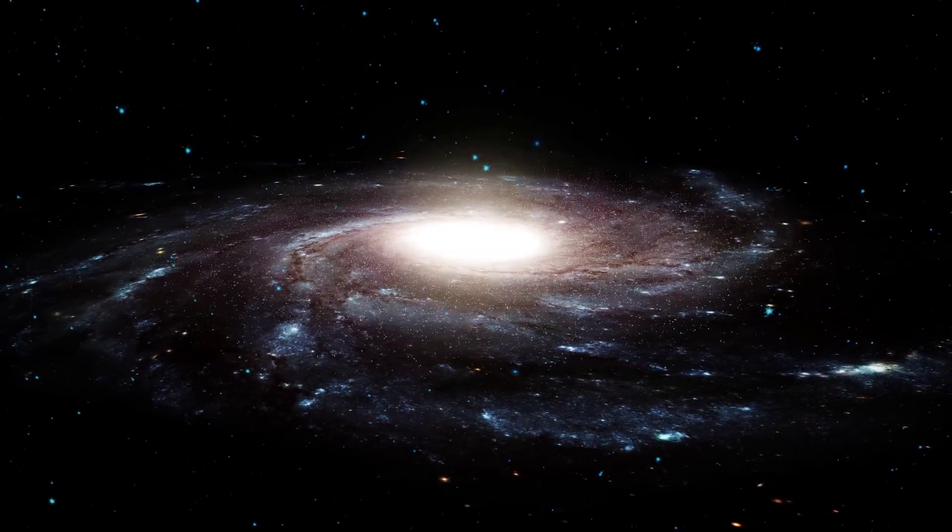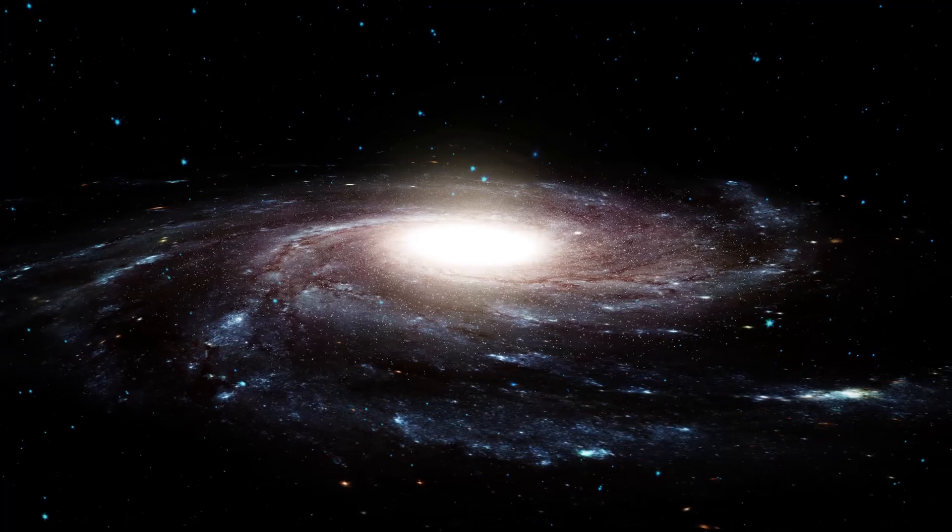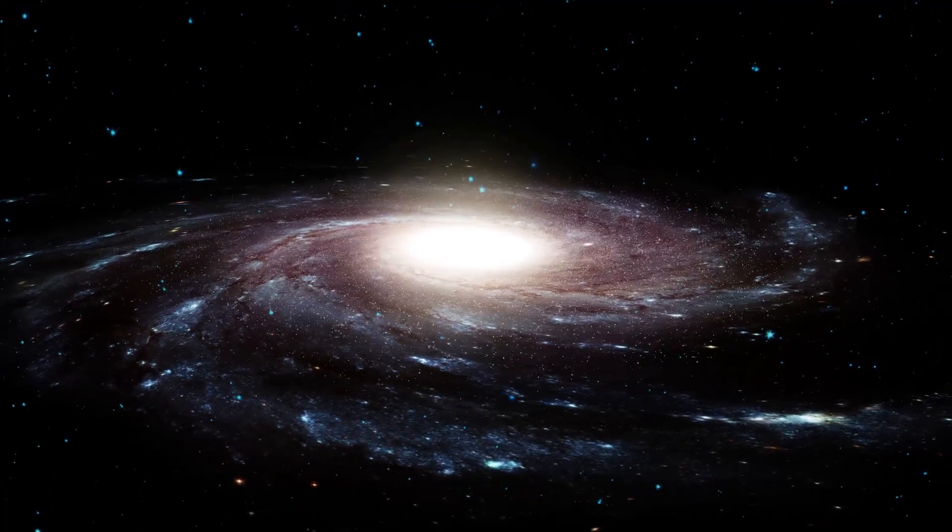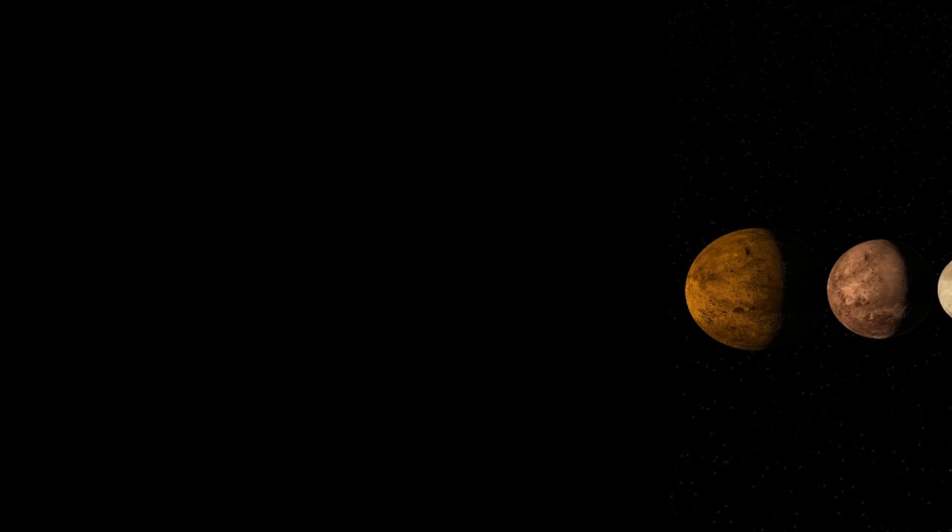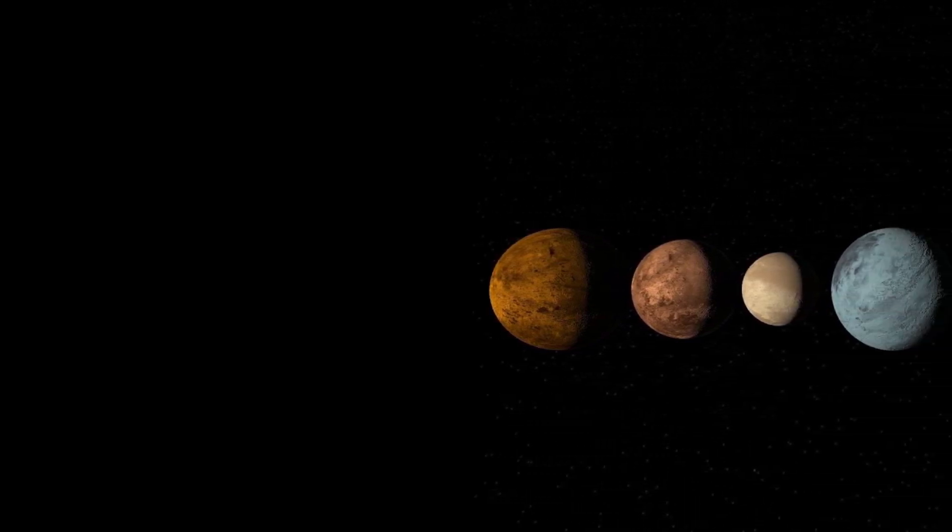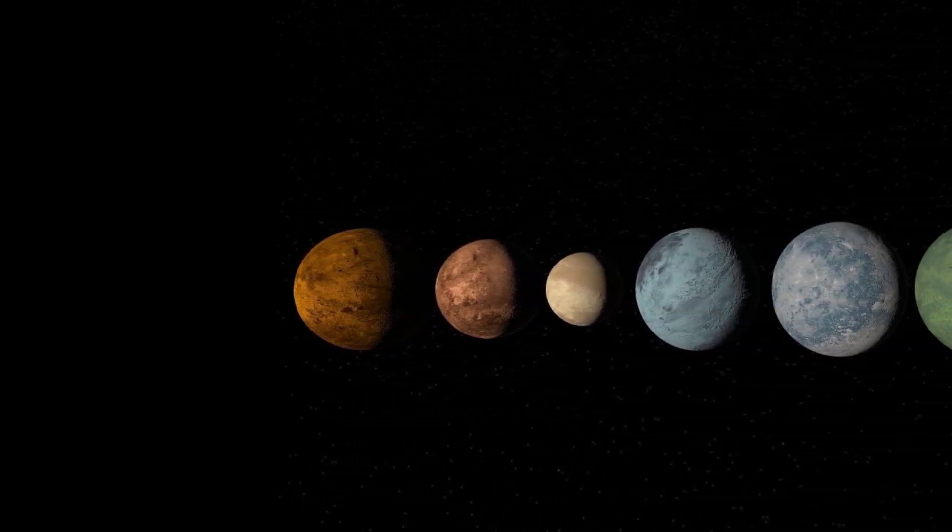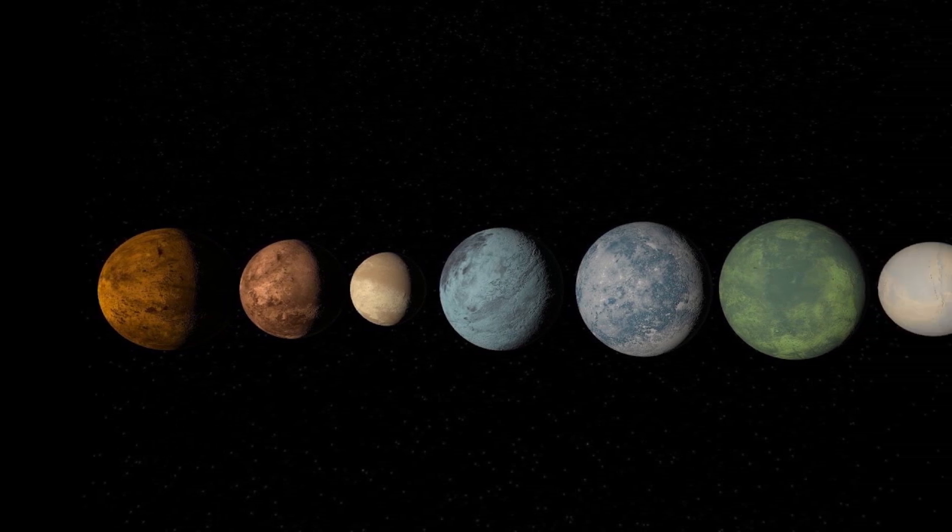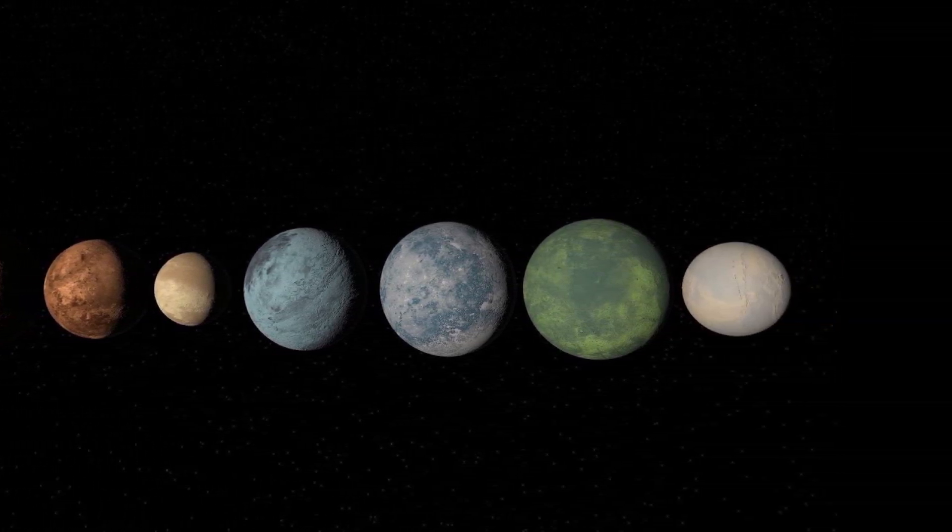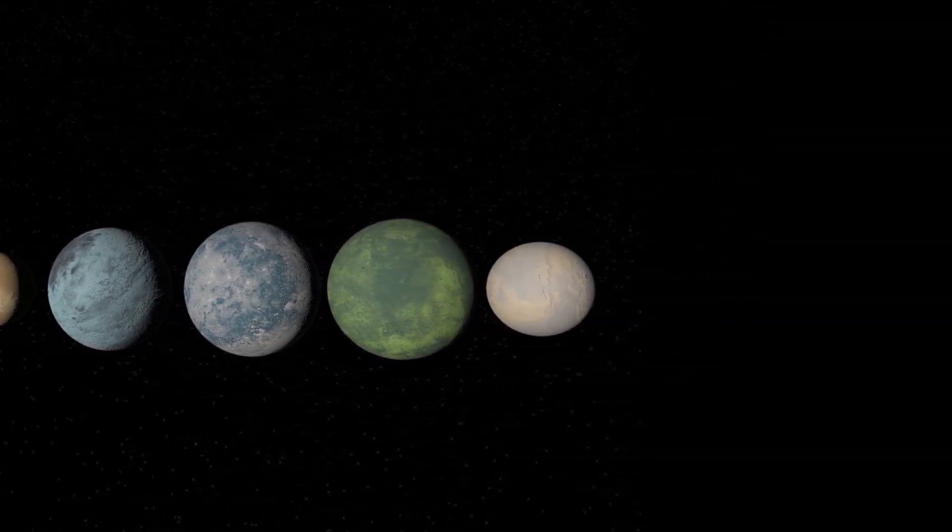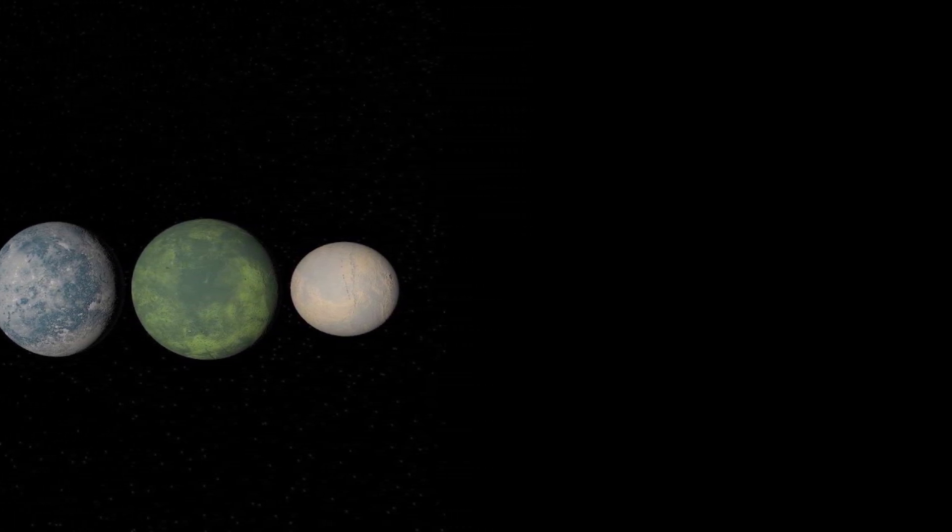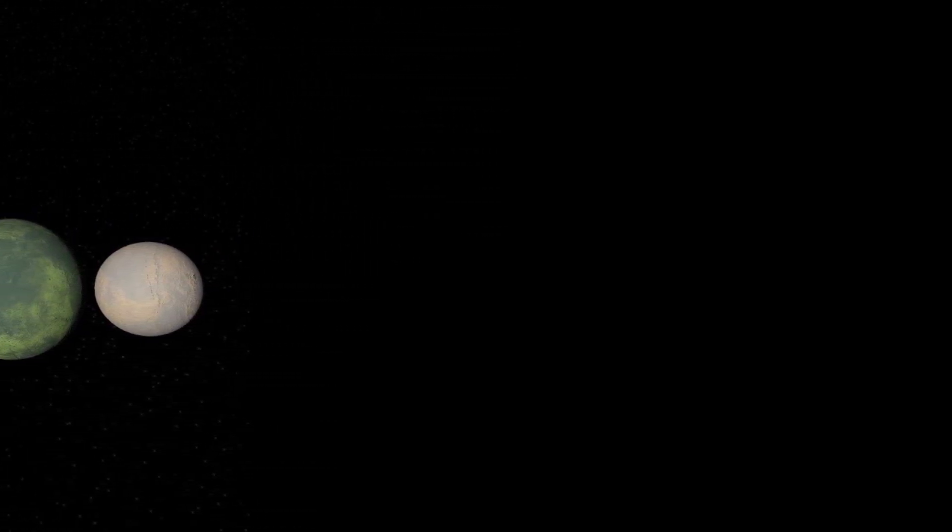The temperature of TRAPPIST-1b. The TRAPPIST-1 system, known for its multiple planets, some of which are in the habitable zone, has been a significant discovery in exoplanet science. TRAPPIST-1b, the planet closest to the star in this system, is not within the habitable zone, and therefore not considered a suitable candidate for life.